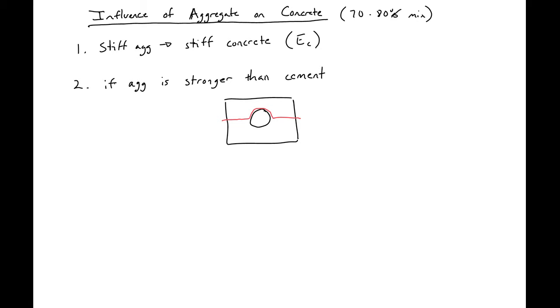So we can contrast that with if our cement is stronger than our aggregate. Then what's going to happen is if we have the same aggregate and cement example, our failure will go through the aggregate.